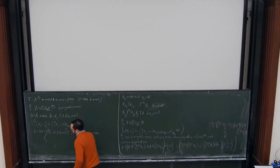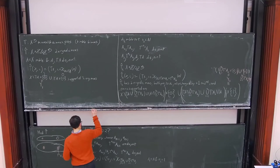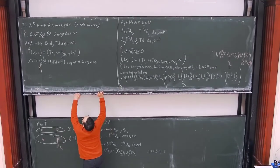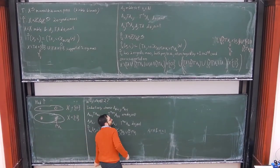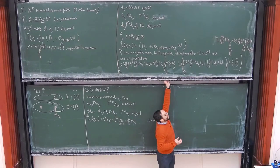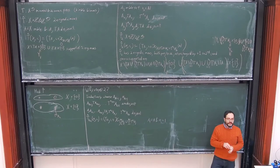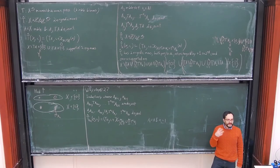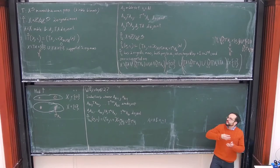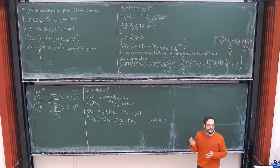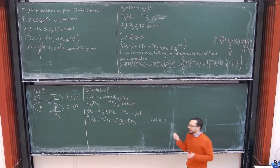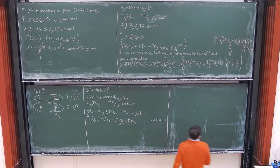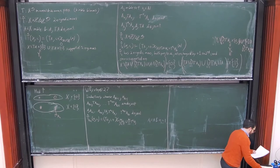Now we want to do this in the special case of rotations. This is connected to continued fraction expansions. The point — to steal the thunder — is that when you consider rotations of the circle by an irrational number with unbounded partial quotients, you can run this construction and arrange for the union of all the A_i's to be an interval. Let's do a brief recollection of continued fractions.